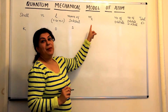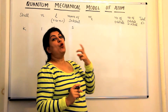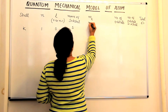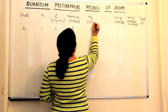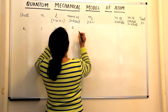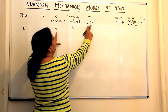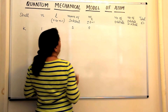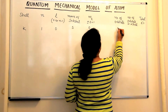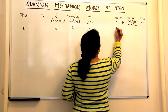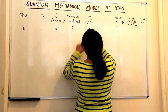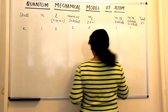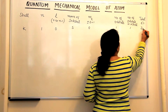What would be the value of ML? If the value of L is 0, then the value of ML is from plus minus L to 0, which gives just one value: 0. So how many orbitals does the K shell have? It has only one orbital — one orbital of the S type. Total number of orbitals in the shell is 1, and if there is one orbital, there would be 2 electrons.